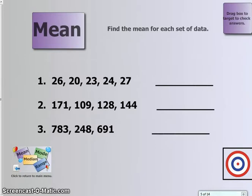Now we're going to look at a few examples of how to find the mean of each set of data. If we look at number 1, we're going to add. First, 26 plus 20 plus 23 plus 24 plus 27. So I'm going to add, and I want you to do this on your paper with me. Don't let me do all the work. We need to add all of these up first.